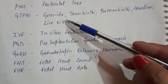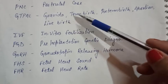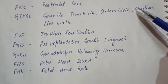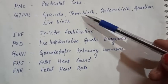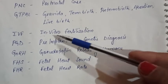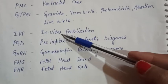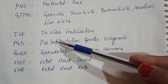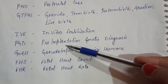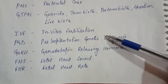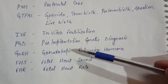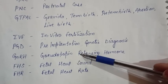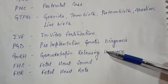GTPAL stands for gravida, term birth, preterm birth, abortion, and live birth. IVF is in vitro fertilization. PGD is pre-implantation genetic diagnosis. GNRH is gonadotropin releasing hormone.